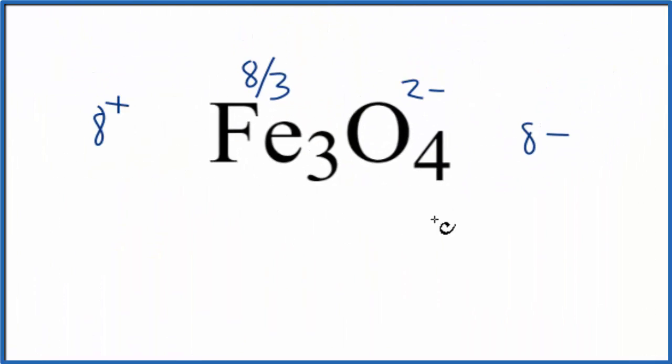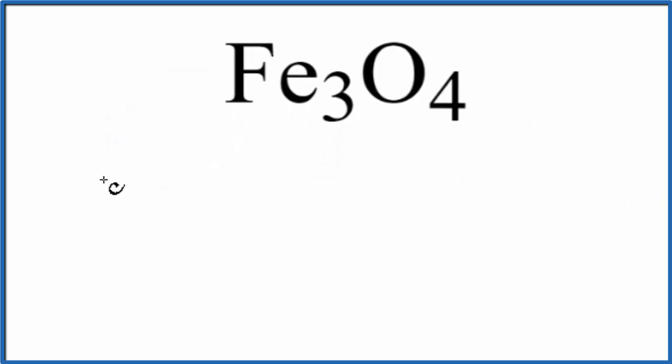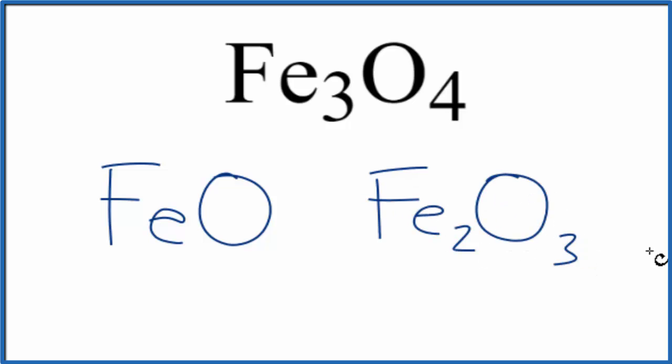Fe3O4 is made up of 2 iron oxides. We have iron 2 oxide, that's FeO, and then we have iron 3 oxide, which is Fe2O3. So we have these 2 separate iron oxides and they're together in the compound in this Fe3O4.